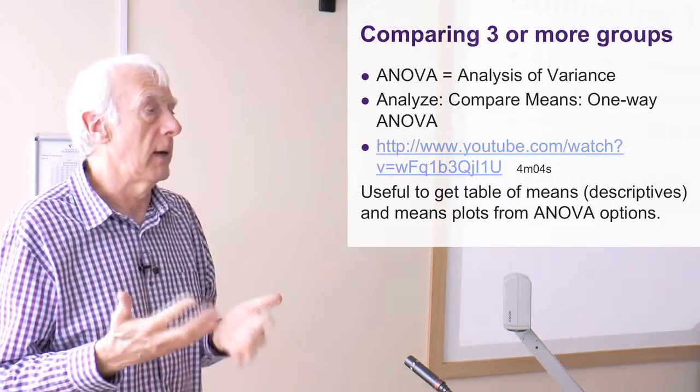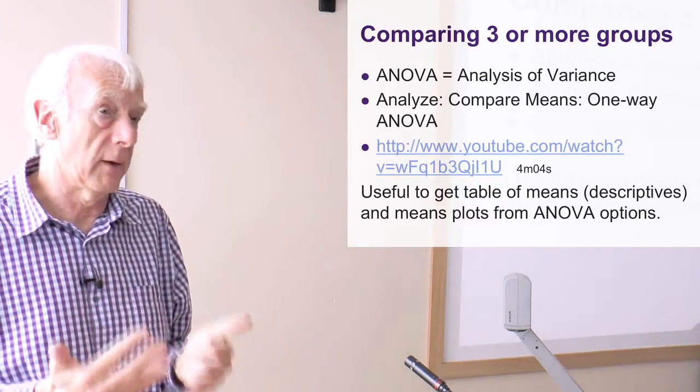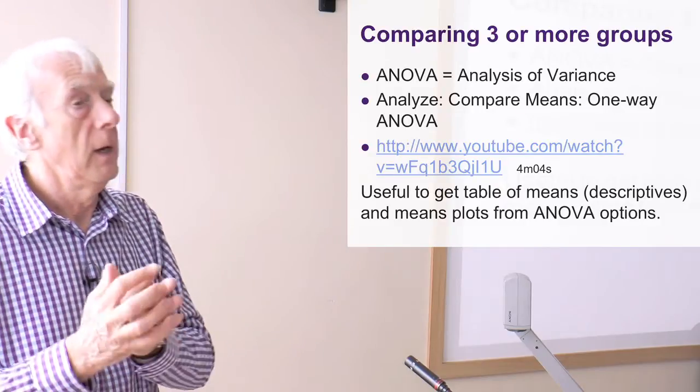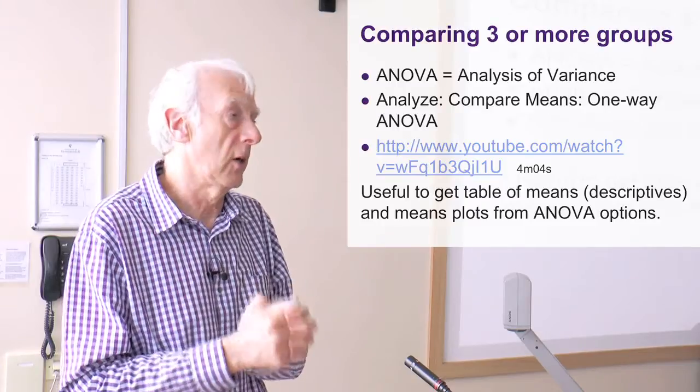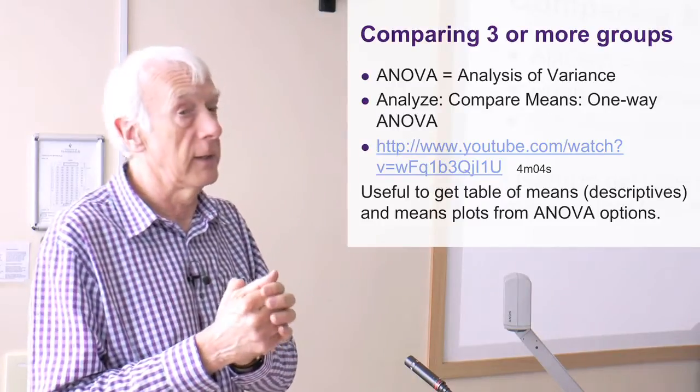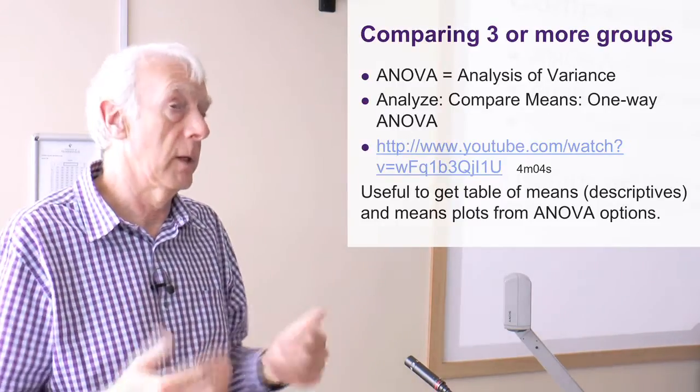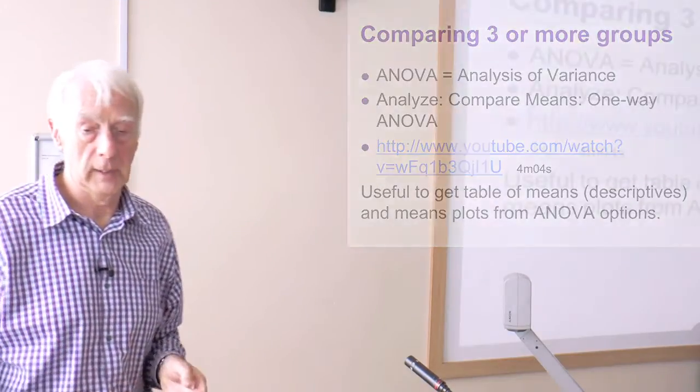And then you can actually then talk about what was going on in the data you got. The ANOVA, the statistical test, tells you whether you could have got that by chance or not, and therefore whether it's statistically significant, assuming it's taken from a sample from a broader population.